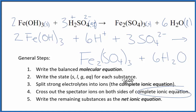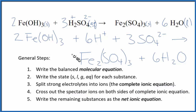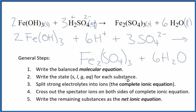Now we can cross out spectator ions — they appear on both sides of the complete ionic equation. In this case, I don't see anything that's the same in the reactants and the products. So the net ionic equation and the complete ionic equation are the same thing. Let me clean this up, add the states, and we'll have our net ionic equation for Fe(OH)₃ plus H₂SO₄.